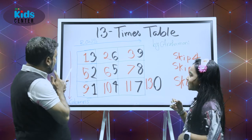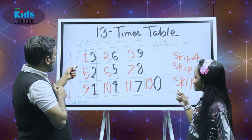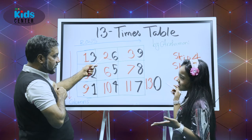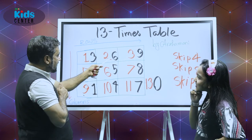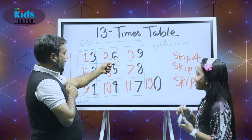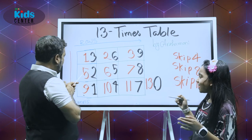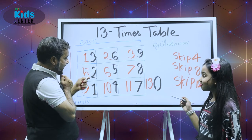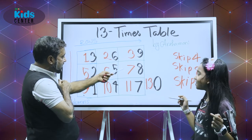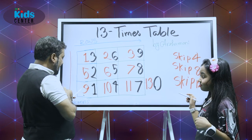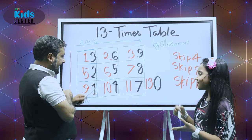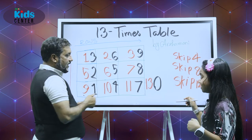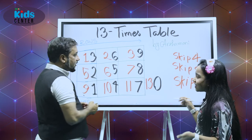Let's check — I don't believe you. Thirteen ones are? Thirteen. It works! Thirteen twos are? Twenty-six. Girl, are you crazy? Thirteen threes are? Thirty-nine. Oh my God, it works! Thirteen fours are? Fifty-two. Thirteen fives are? Sixty-five. Thirteen sixes are? Seventy-eight. Thirteen sevens are? Ninety-one. Thirteen eights are? One hundred four. Thirteen nines are? One hundred seventeen. And lastly, thirteen tens are? One hundred thirty. How come? It's really a lovely system.